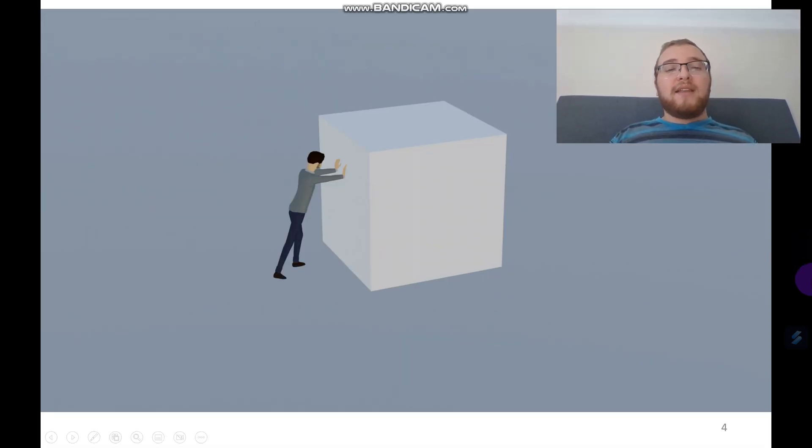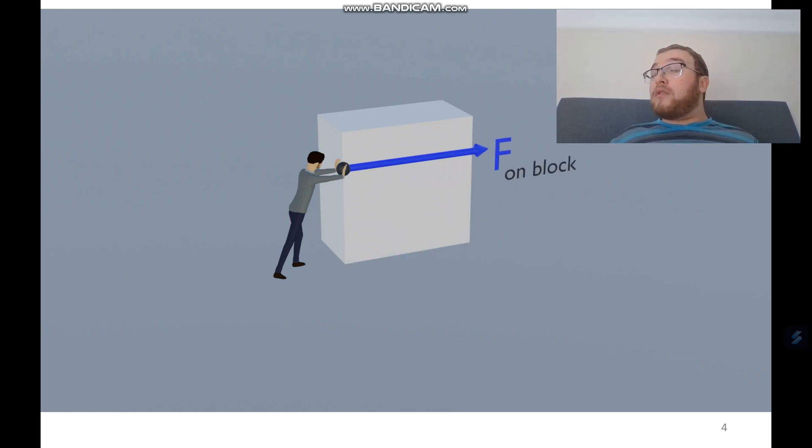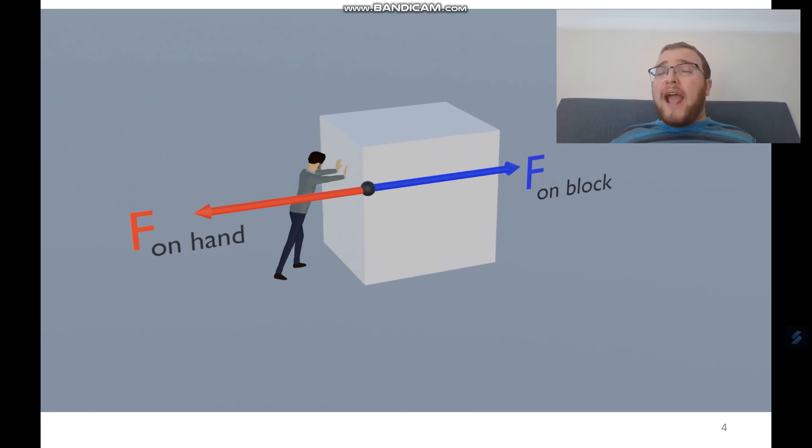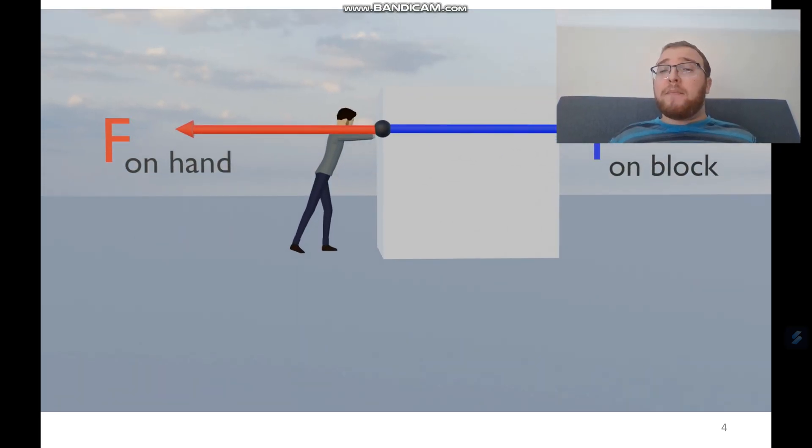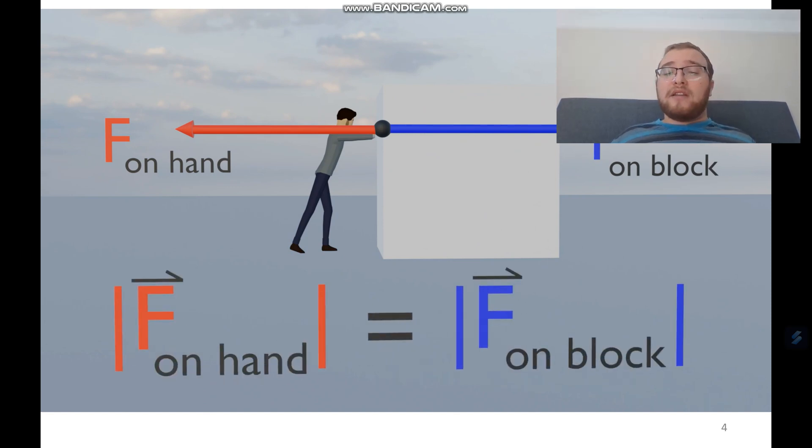So as an example of that, we have this man here pushing on a block, and because of that, we know that there's a force on the block. We call it F on block. But there's also the force from the block on the man, on his hands. Those two forces, we know from Newton's third law, are an action-reaction pair. They're a pair of forces, and they are equal in magnitude and opposite in direction. The arrows are the same length, just going the opposite way.